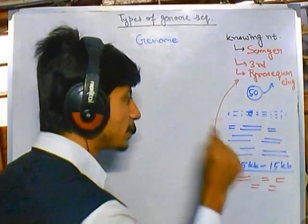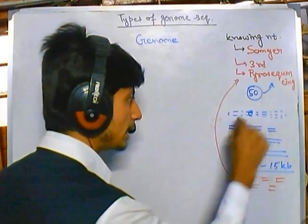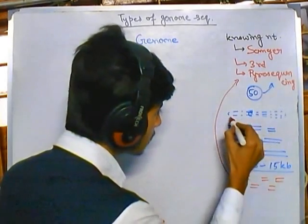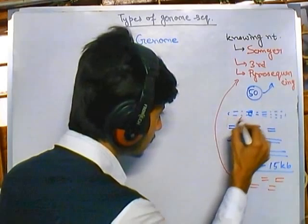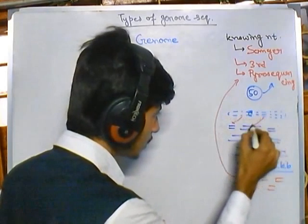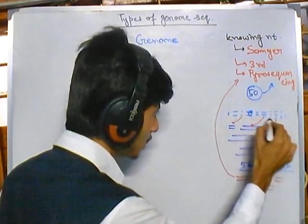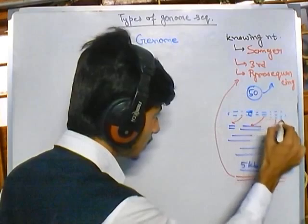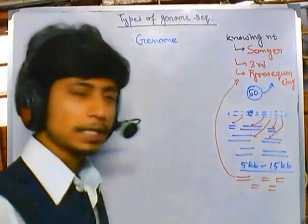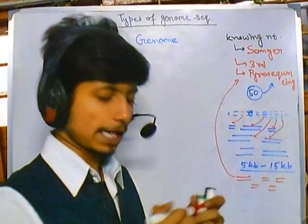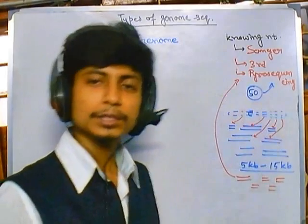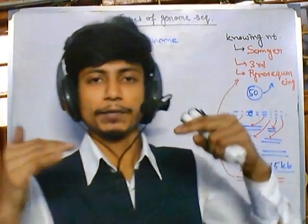For connecting the dots, we must keep track of which part of the DNA was generated from which region. For example, if we know that this fragment is part of this section, this fragment is part of another section, and so on — if we know that particular information, then only can we place them correctly and get the full picture.